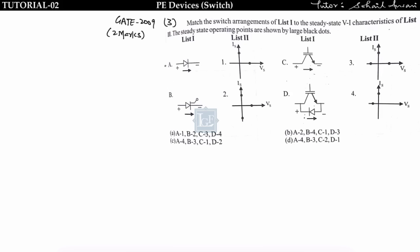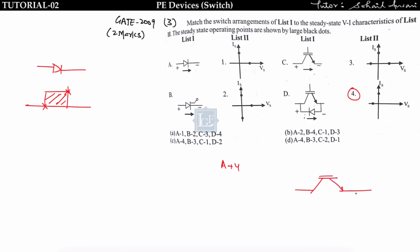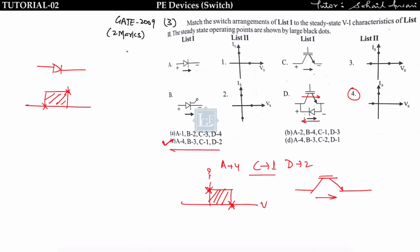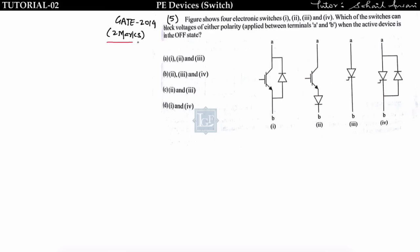Third problem involves matching switches to I-V characteristics. Diode: unidirectional and unipolar — safe operating area is second quadrant, matches option 4. Transistor: unidirectional and unipolar, blocks only positive voltage — safe operating area is first quadrant, matches option 1. Since both options C and D include these matches and b corresponds to option 3 in both, option C is correct. This was GATE 2009, two marks.